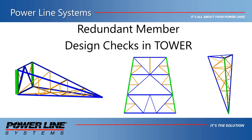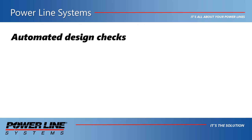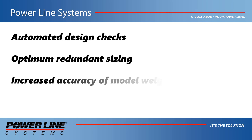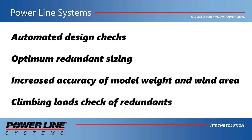It is not required to include redundant members in your tower models, but including redundants provides several advantages: it allows for automated design checks based on a selected design code; optimum sizing based on actual loads or as a percentage of the load in the braced member; a more accurate automated calculation of tower weight and wind area; and the ability to check redundant members for climbing loads from personnel standing at the middle of the member.